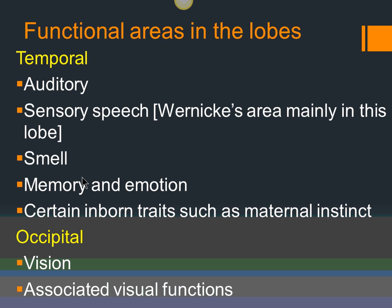The temporal lobe is next to the temporal bone, close to the ears, so a way to remember it is: ears = hearing. Auditory function is processed here. Wernicke's area is mainly in the temporal lobe. The temporal lobe is also where smell is perceived, and it is responsible for memory and emotion — there's a part called the hippocampus. It connects to the limbic system, which is important for inborn traits like maternal instinct and libido.